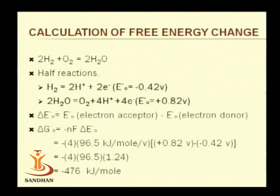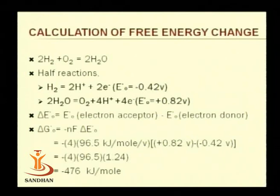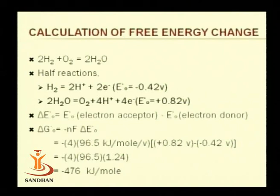The formula is: delta G0' (free energy change) equals minus N × F × delta E0', where N is the number of electrons transferred, F is the Faraday constant, and delta E0' is the difference in the reduction potential. For the reaction 2H₂ + O₂ → 2H₂O, the difference in redox potentials of the two half-reactions has been calculated, their difference is put into the formula, and the free energy change is obtained.